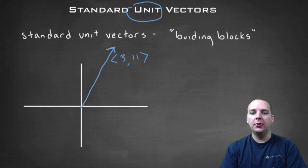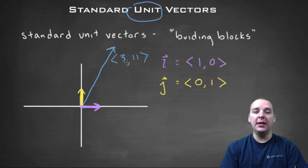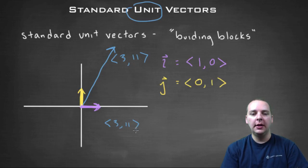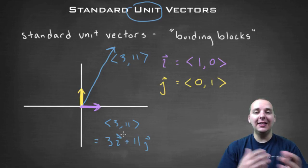This vector <3,11> in component form can be written as three copies of i plus eleven copies of j. So you can write these in either form.